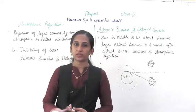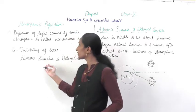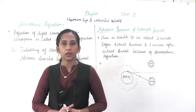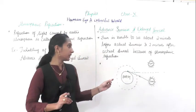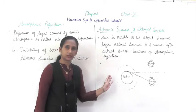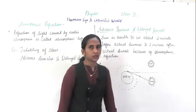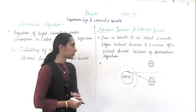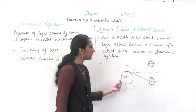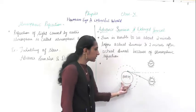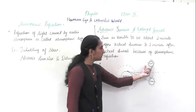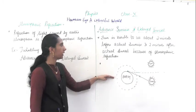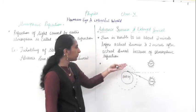Now we are going to study the second example of atmospheric refraction - advanced sunrise and delayed sunset. This is a very interesting topic. At morning you have seen the sunrise. What actually happens - this is a very interesting concept. In this concept you are going to study that the sun is visible about two minutes before actual sunrise.